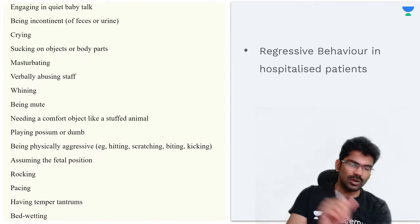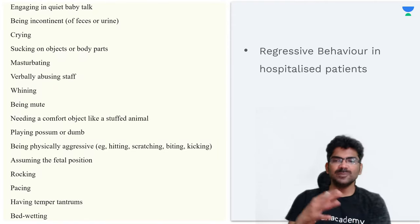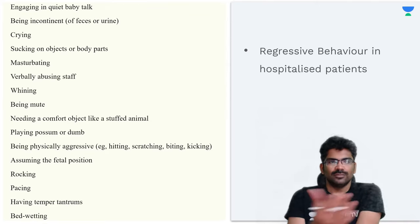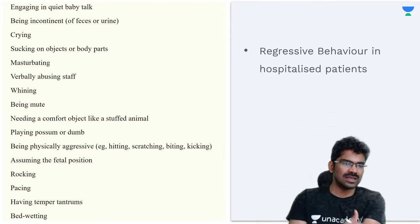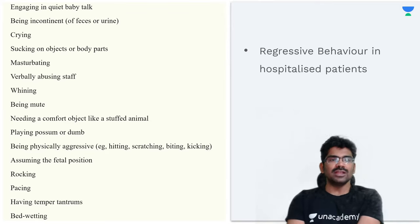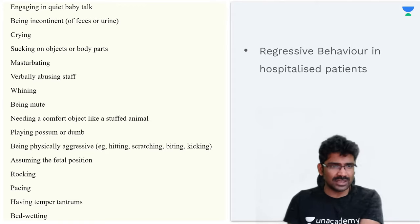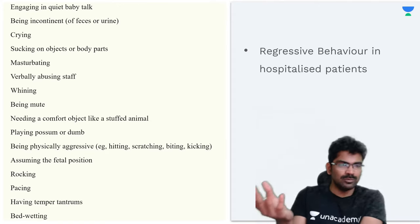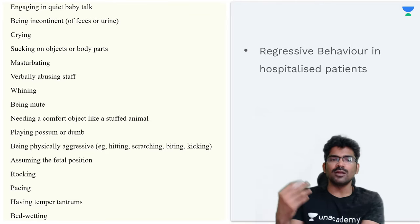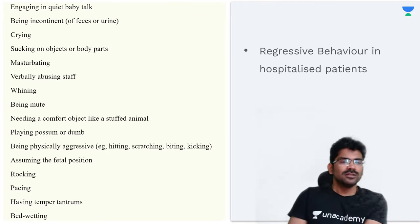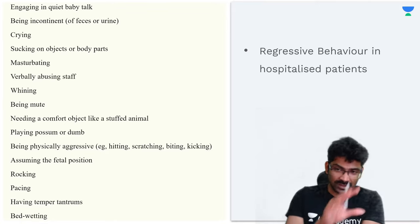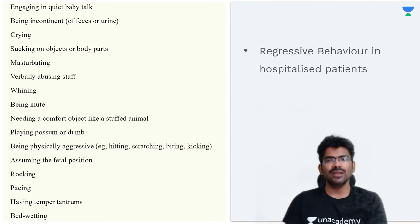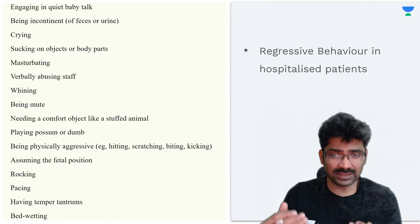Look at regressive behavior in hospitalized adult patients. Examples include: engaging in baby talk, being incontinent, crying, whining, suddenly becoming mute, playing possum or dumb, being physically aggressive, or assuming the fetal position. These are all examples of regressive behavior seen in hospitalized patients.